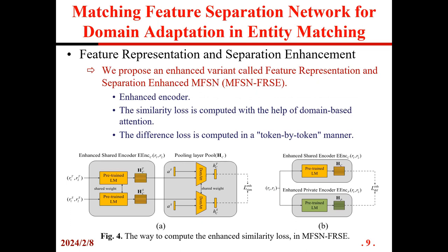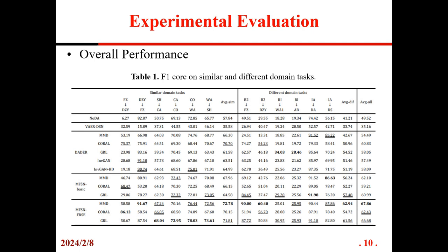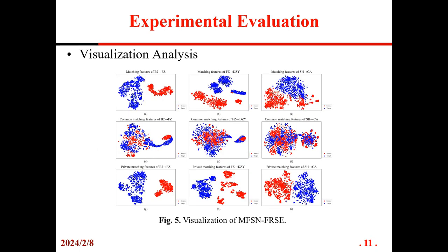We also propose an enhanced variant called MFSN-FRSE. In brief, we improve the encoder's similarity loss and difference loss to achieve better Domain Adaptation performance. Compared with baseline methods, our models achieve higher F1 scores in both similar and different domain tasks. The visualization results indicate that the common matching features in both domains are similar, while the private matching features in both domains are significantly different.